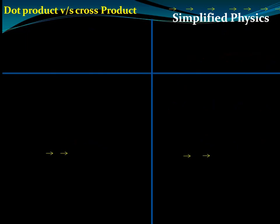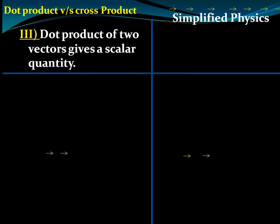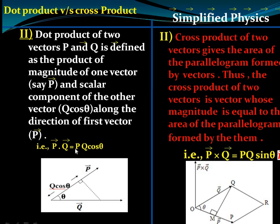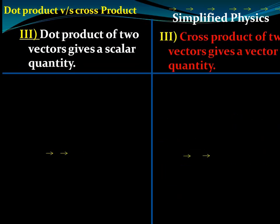The dot product of two vectors gives a scalar quantity — p, q, and cosθ are all scalars, so pq cosθ is a scalar. Similarly, the cross product of two vectors gives a vector quantity.